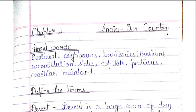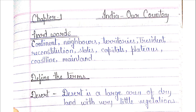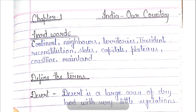Coming to the chapter's hard words that you need to note and memorize the spellings of: continent, neighbors, territories, president, reconstitution, states, capitals, details, coastline, mainland. Write all these words in your copy and memorize their spellings.